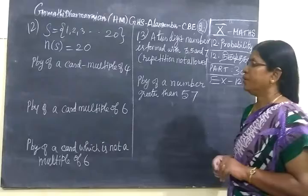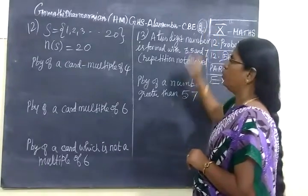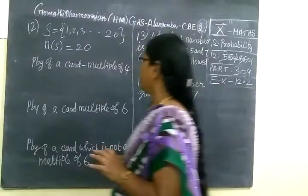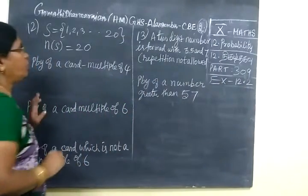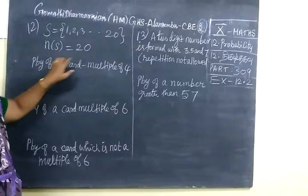Now we see part 309. The 20th and 13th questions will come under two mark questions. So we are given samples 1, 2, 3, etc., up to 20. So N(S) equals 20.